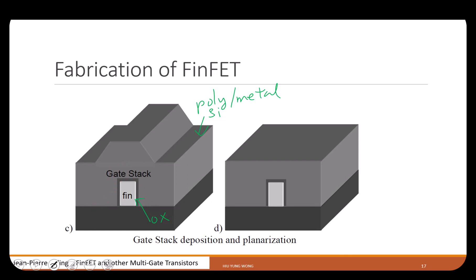CMP was a very important invention — not originally for FinFET, but in order to have many layers on the wafer. If you don't polish it flat, then lithography becomes a problem, because different locations on the wafer will have a different distance to the focus of the lens and you won't be able to form a good image. CMP combines chemical and mechanical methods — they use a pad to keep polishing the wafer.